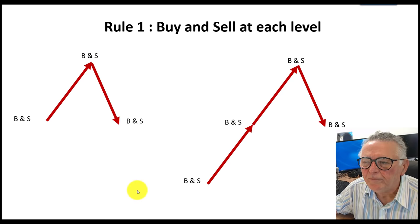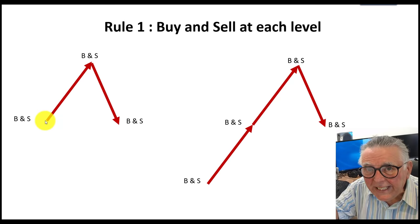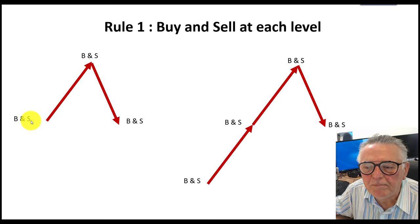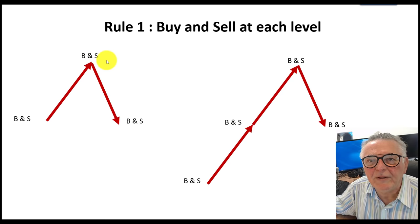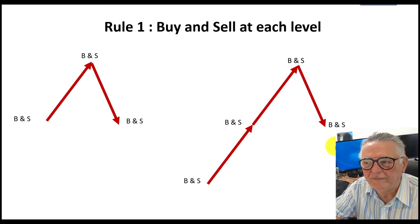Rule one: when you reach a particular grid level, you enter a buy and a sell. You are guaranteed to have a successful deal because the market is going to go either up or down. I enter a buy and a sell at every single level. If it goes up, I enter another buy and sell at that level; if it goes down, the same thing. No matter what price action happens, you just enter buys and sells at each level — really simple.